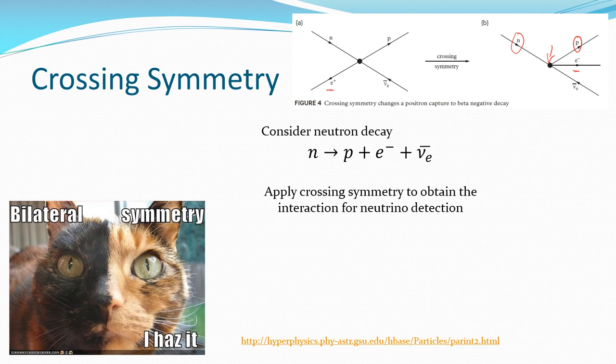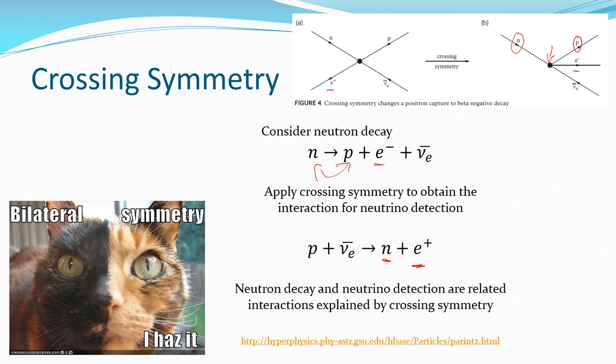So if we consider our neutron decay, we have a neutron decaying into a proton, an electron, and an electron anti-neutrino. If we apply this crossing symmetry, we can put something over the other side. This looks a little bit weird in that I've almost reversed these two here. So the neutron's over here, and our electron went over the other side and became a positron over there. Neutron decay, neutrino detection is an example of crossing symmetry.